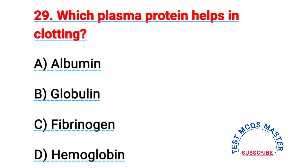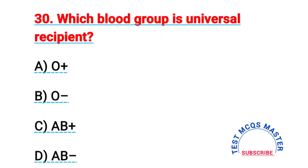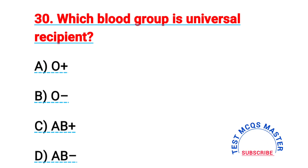Question number twenty-nine: which plasma protein helps in clotting? The right answer is C, fibrinogen. Question number thirty: which blood group is the universal receiver? The right answer is C, AB positive.